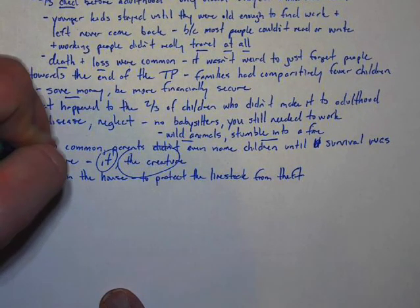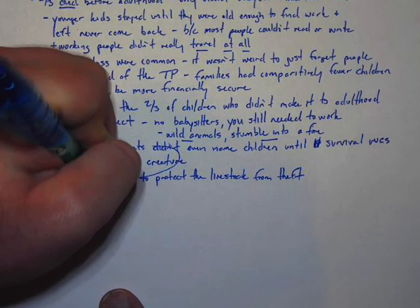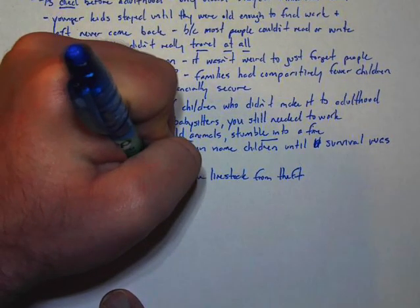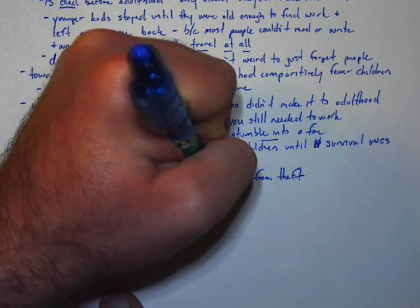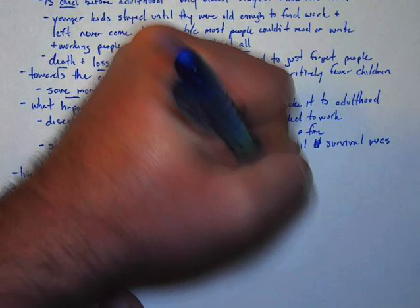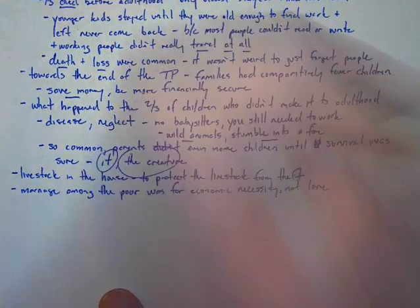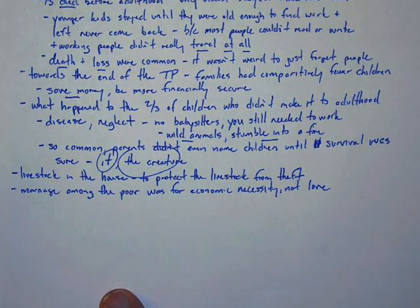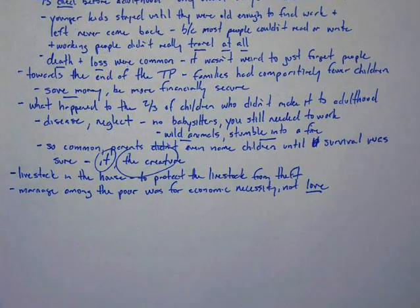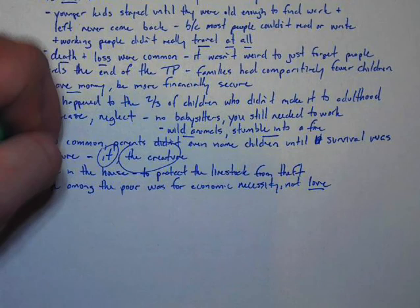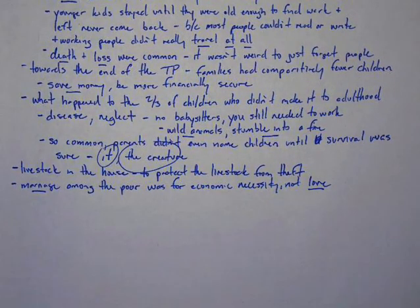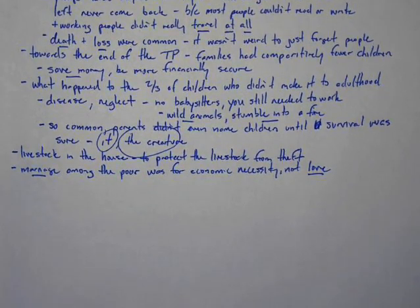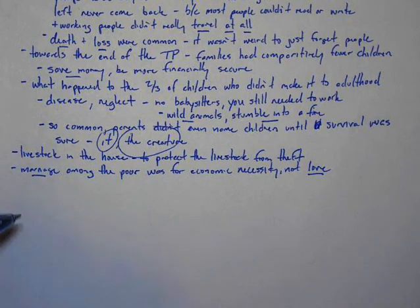Marriage during this period - marriage among the poor - was for economic necessity, not love. You needed a partner; not a soulmate or someone that you loved, but an economic partner to help you live. That's what marriage was. It wasn't something you did because you loved the other person - in fact, most of the time you didn't love the other person. You had to do this if you were going to live. Children were also a necessity.